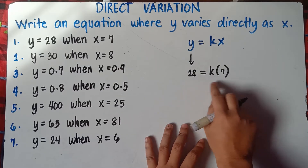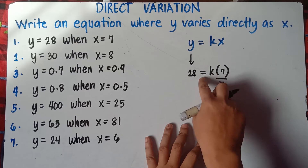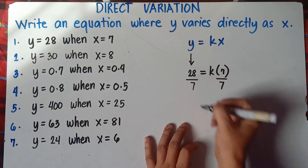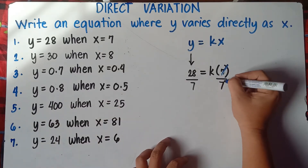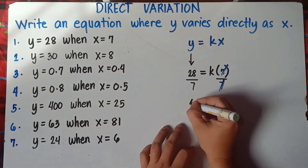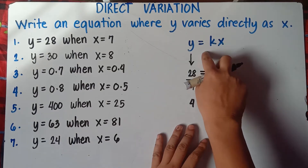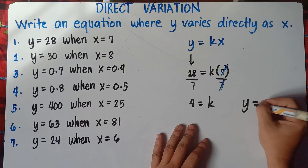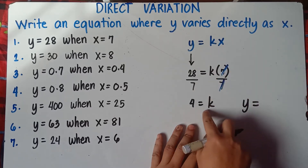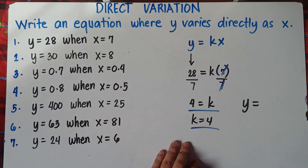To get the value of k, simply divide both sides of the equation by 7, so that the remaining equation on the right side of the equal sign is just k. You divide by 7 to cancel x out, and the remaining will be k. Can we divide 28 by 7? Yes, we can — 28 divided by 7 is 4. So 4 equals k, or k equals 4.